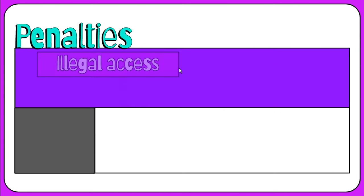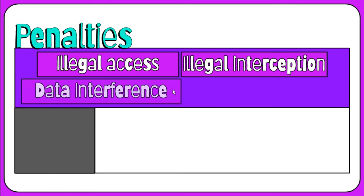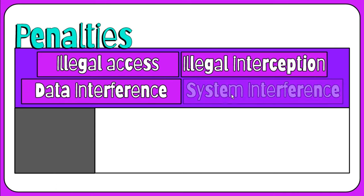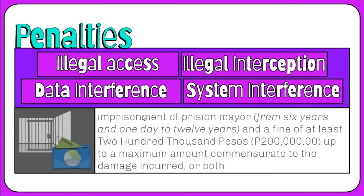Any person found guilty of illegal access, illegal interception, data interference, and system interference shall be punished with imprisonment from 6 years and 1 day to 12 years, or a fine of at least 200,000 pesos up to a maximum amount commensurate to the damage incurred, or both.